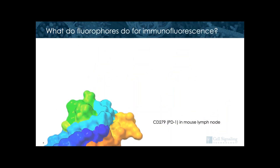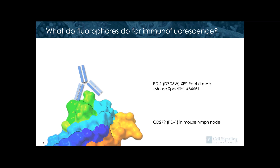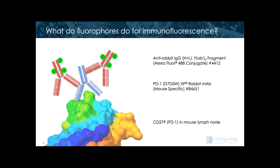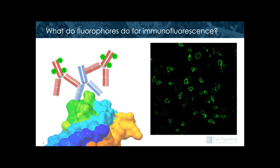Now let's talk about how fluorophores work in an immunofluorescence experiment. At the bottom left, I have a 3D model of PD-1. Let's imagine that this is being expressed in a mouse lymph node. I can use an antibody to detect this protein — in this case, a rabbit anti-PD-1 antibody. However, without additional steps, I have no way of visualizing where the antibody is located. So I'll use an anti-rabbit secondary conjugated to fluorophores, in this case Alexa Fluor 488. When I expose the fluorophores to light of the appropriate wavelength, using a charge-coupled device to capture the image, I'm able to detect the light emitted from my antibody in my sample.